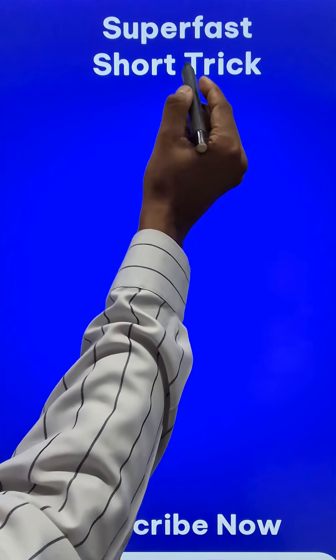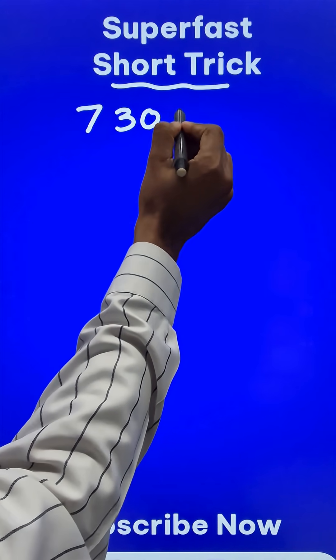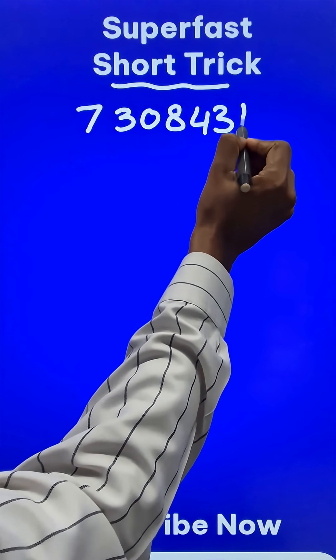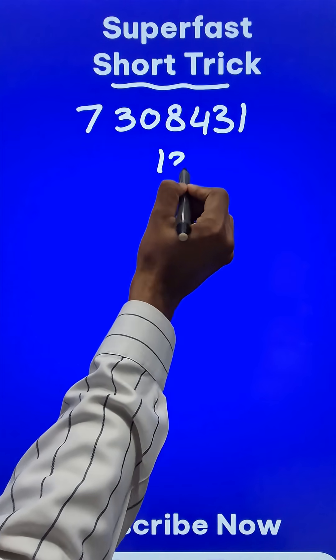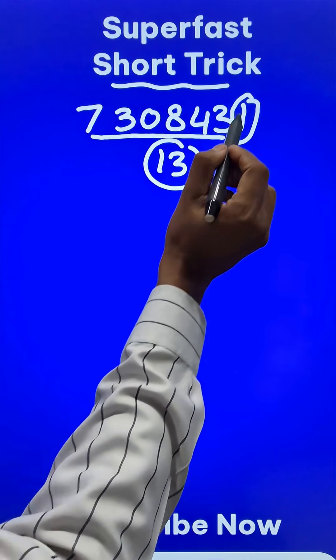Here is the super fast short trick to check whether the number 7308431 is divisible by 13 or not. Let's do one thing. We will write the first six digits and separate out the last digit 1.